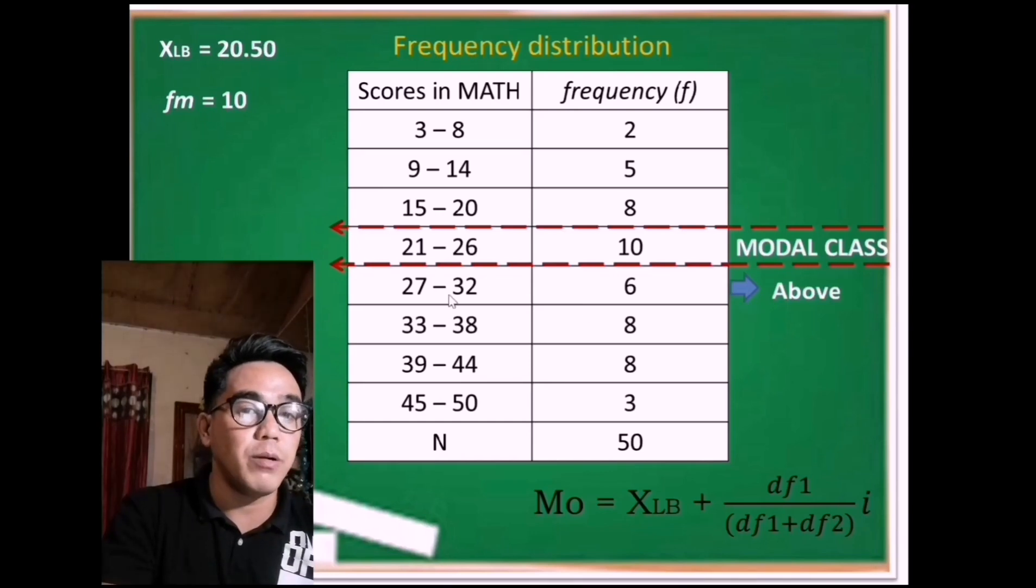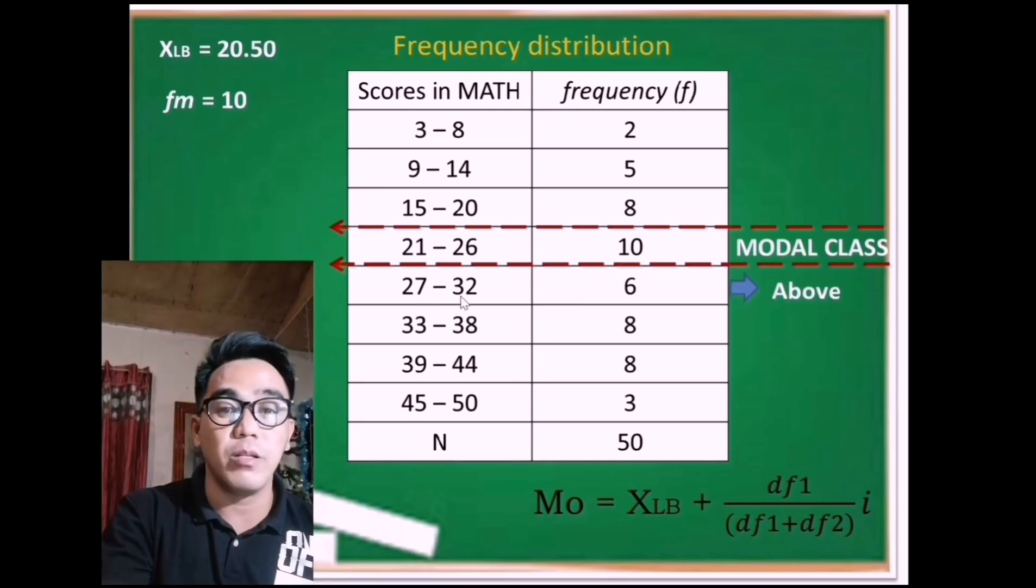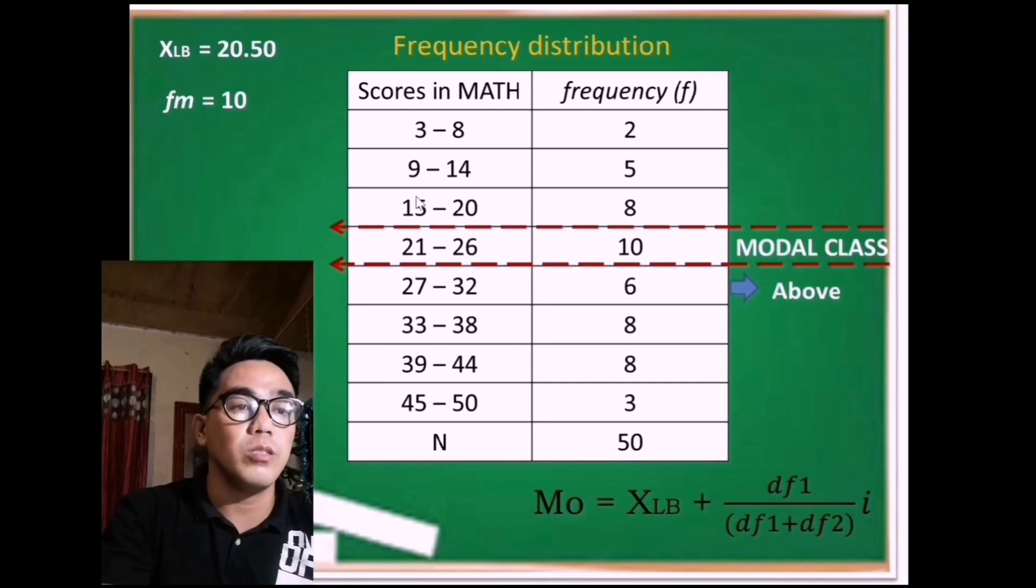Now, if this is the above row, which is the below row? This is now the below row of the modal class.